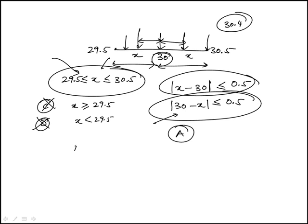And if you look at B, you would plug in 30 minus 30.4. Is that greater than 0.5? This is absolute value of minus 0.4, which is 0.4, is not greater than 0.5. So that's how you eliminate B.